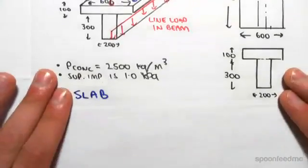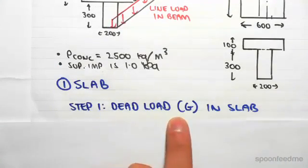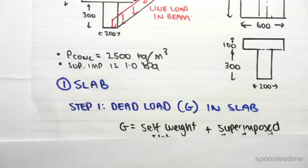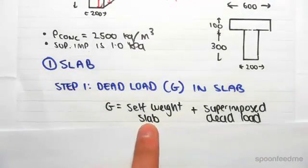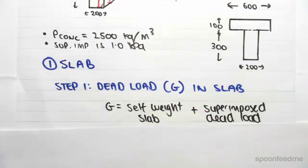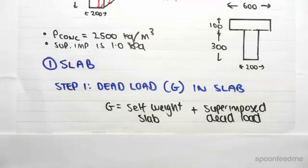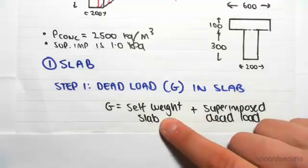So the first thing we're going to deal with is the slab. We're going to first work out the dead load G in the slab. The dead load, as we said in the previous video, is comprised of self-weight of slab and superimposed dead load of the slab. Dealing with the self-weight first, that component first.